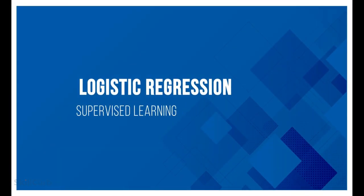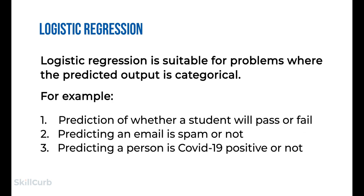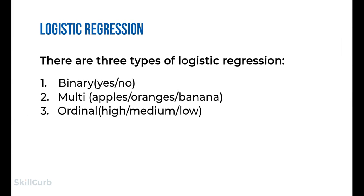Moving on to logistic regression. Logistic regression is a classification algorithm used to assign observations to a discrete set of classes. Examples include email spam or not spam, online transactions fraud or not fraud, and tumor malignant or benign. Logistic regression transforms its output using the logistic sigmoid function to return a probability value. There are three types: binary, multi, and ordinal.